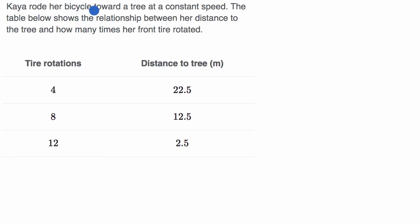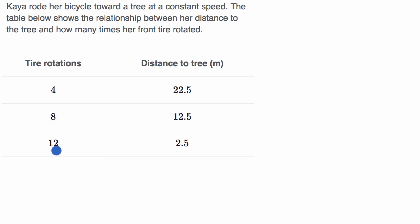We're told Kaya rode her bicycle toward a tree at a constant speed. The table below shows the relationship between her distance to the tree and how many times her front tire rotated. Once her tire rotated four times, she was 22 and a half meters from the tree. Once she's rotated eight times, she's 12 and a half meters from the tree. When it rotated 12 times, she's only two and a half meters to the tree — so she's getting closer and closer with more rotations.